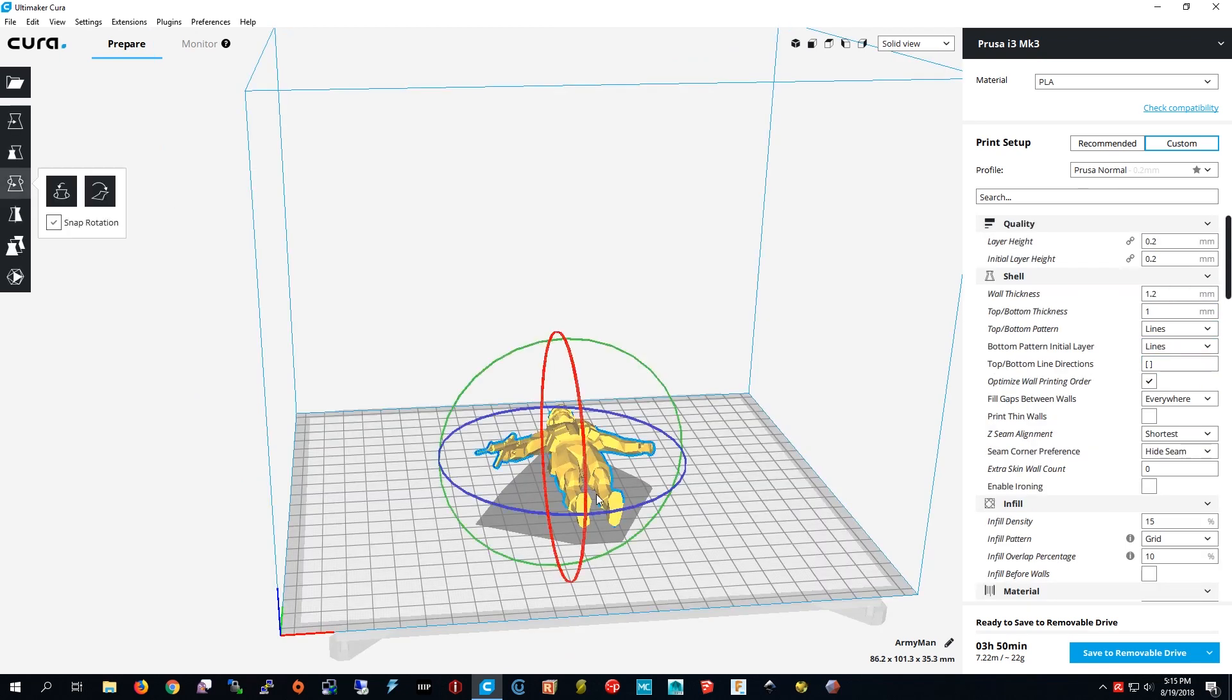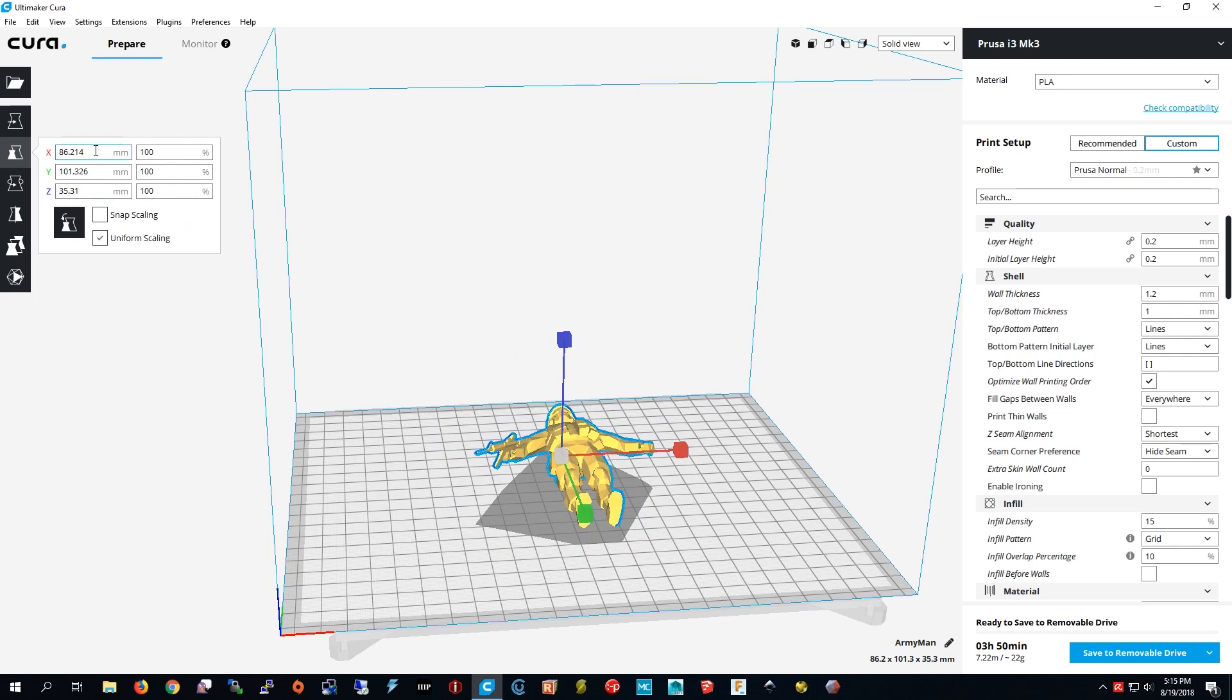I also know that this army man is too big, so I'm going to press him, press scale. A regular army man is usually 54 millimeters tall. So I do this, and it turns it into this size.